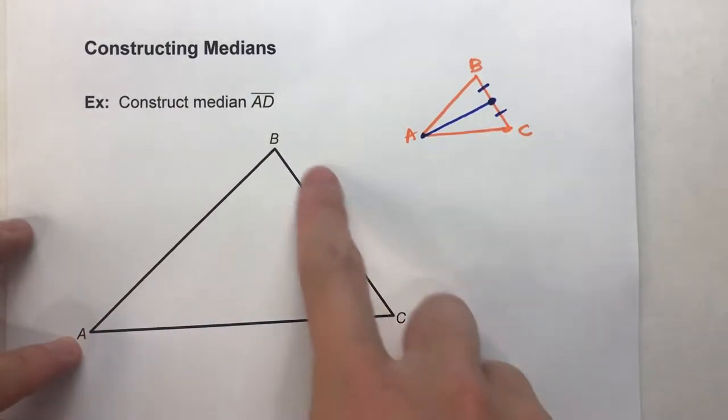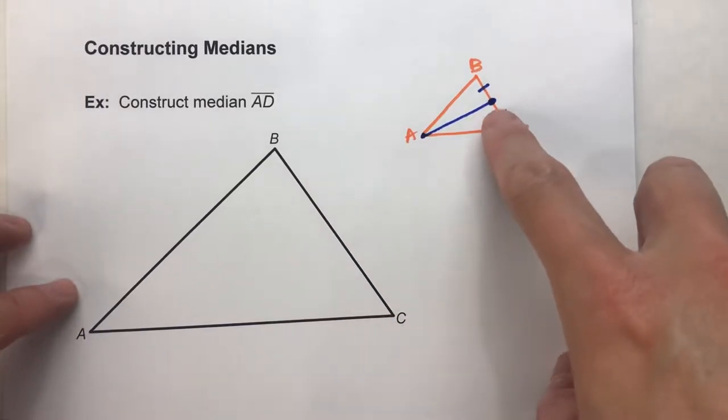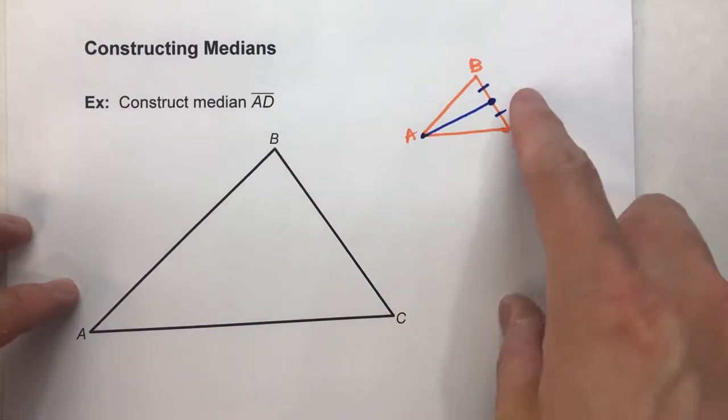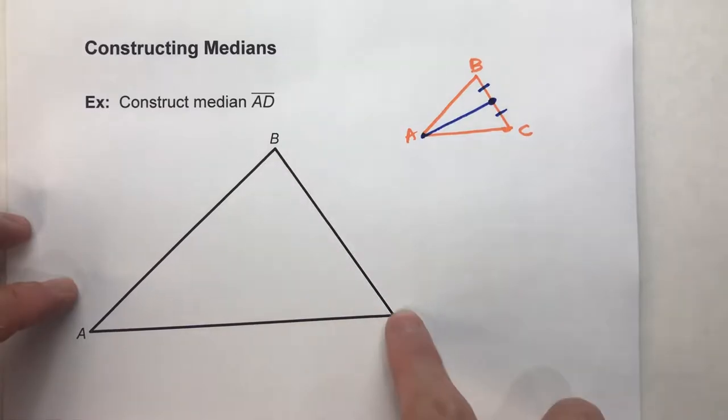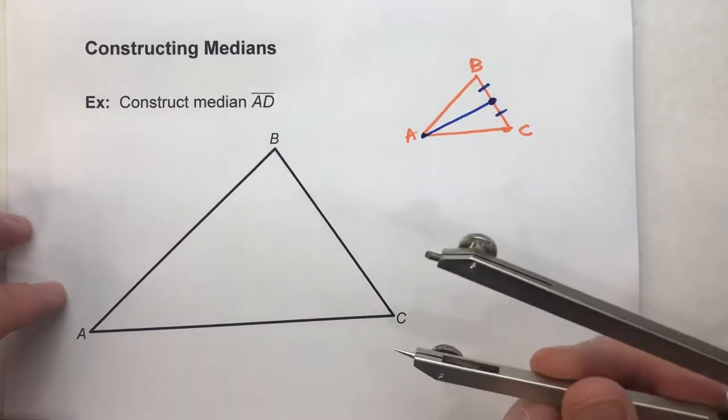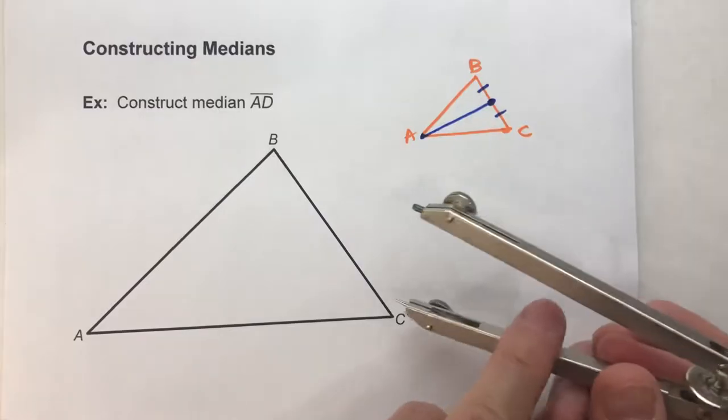So that's what we're going to do here. Our first step is to find that midpoint. And in order to find the midpoint of a segment, we're going to have to construct the perpendicular bisector of that segment.